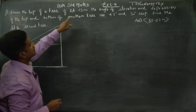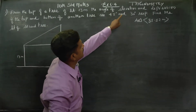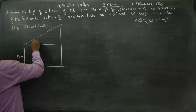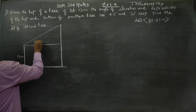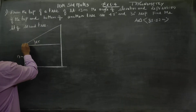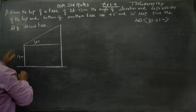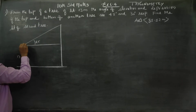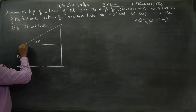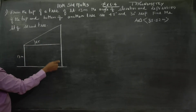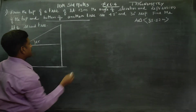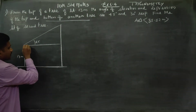This is my ground level. Here is a tree of height 13 meters. There is another tree. The angle of elevation is shown — this is the line of sight toward the top of the second tree. From the top of the first tree, we also look at the bottom of the other tree. That is the height of the second tree.